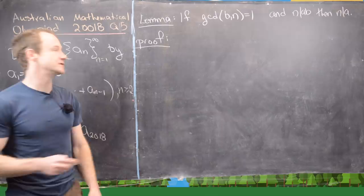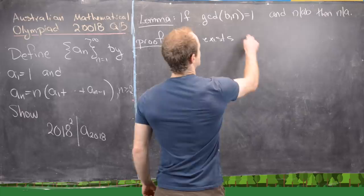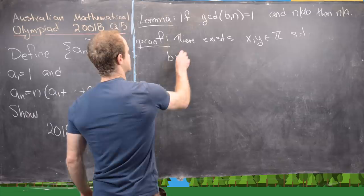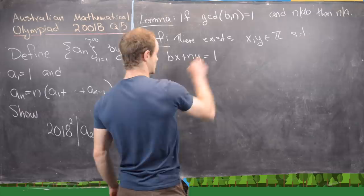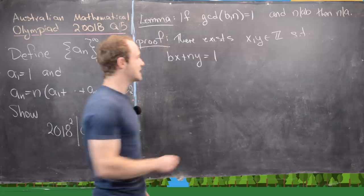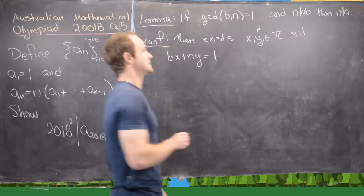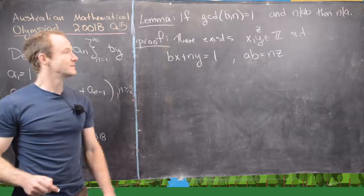So I'll let you guys look it up. It's called Bezout's identity and what that tells us is that there exists two integers x and y such that bx plus ny equals the GCD of b and n but we know that that equals one. And then furthermore because n divides ab we also know that there exists a z so let's add that to the list where ab equals n times z.